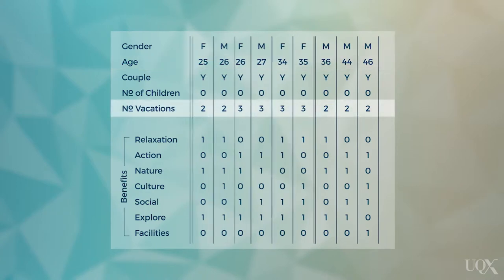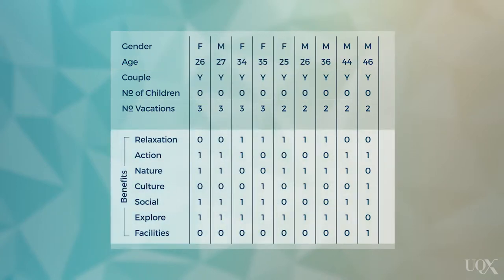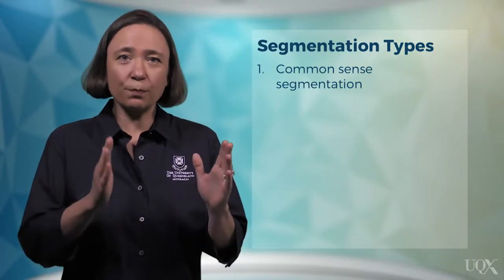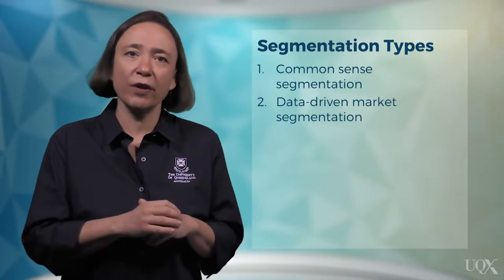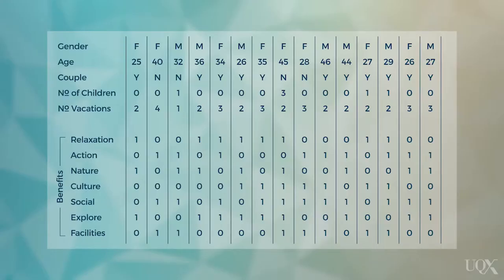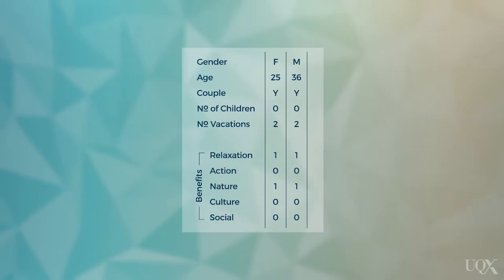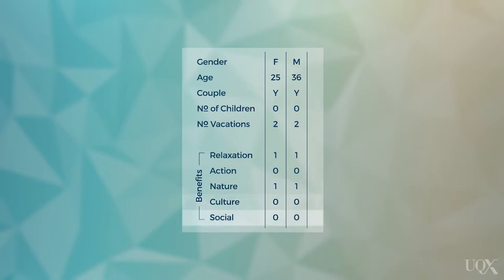We can describe them by age, the number of vacations they take each year, and benefits they seek when going on vacation. Or if we're unsure how to best split tourists up, we can use data-driven market segmentation. Using the same data, we can use information about five benefits sought to create segments. This segment, for example, wants to relax, does not want action, and wants pristine sandy beaches. They do not want to experience culture and meet new people. Again, we can use any additional information available to us to understand this segment as best we can.